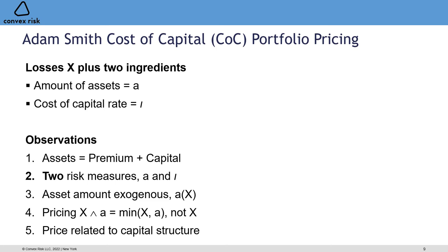This is a limited liability insurance company, so you're pricing only up to the amount of assets: the minimum of X and A rather than the unlimited promise X. You cannot pay more than the assets available; if X is greater than A you just pay out A and default on the remainder. From this we see the price is going to be related to capital structure — a long-term goal that financial pricing papers in the 80s and early 90s were seeking — and it's philosophically aligned with the Cummins option pricing models.